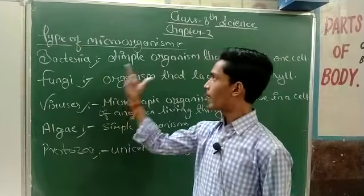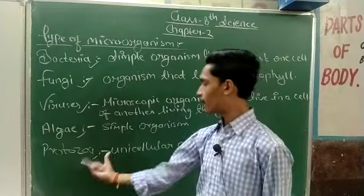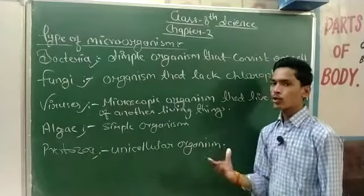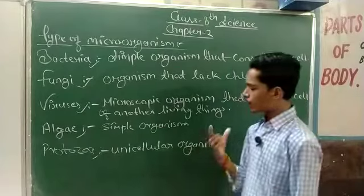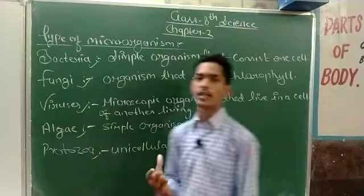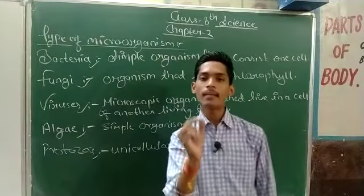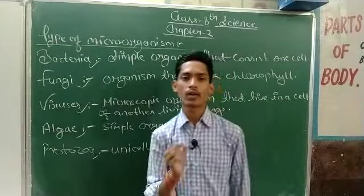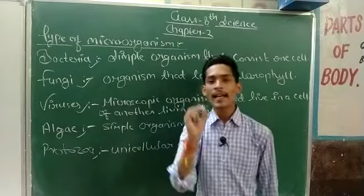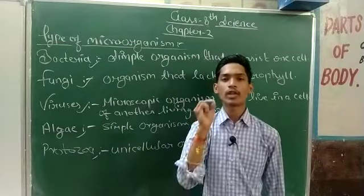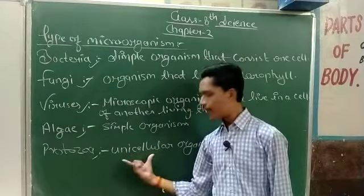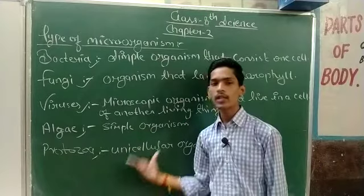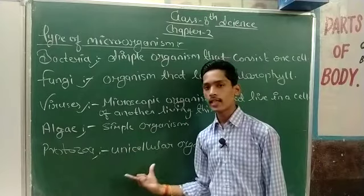Lastly, the type of micro-organism called protozoa. Protozoa is a unicellular organism. The organism has animal-like characters — some characters similar to other animals. It is unicellular, meaning it is made of a single cell.